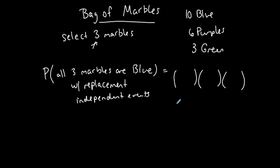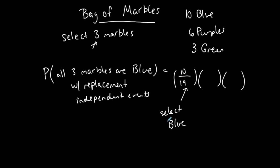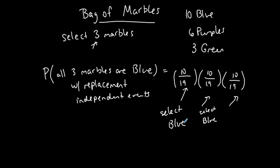I'm going to multiply three different values because I have three different events. The first parenthesis represents the first event: selecting a blue marble. The probability of selecting a blue marble is 10 blue marbles out of a total of 19. If I put that blue marble back, I still have 19 marbles and still have 10 blue. So the second event — selecting another blue marble — is still 10 out of 19. I put that marble back again, and the third event is also 10 out of 19.